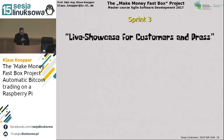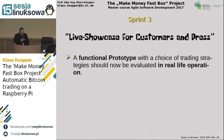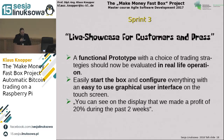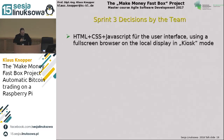Sprint two was very good for learning. From sprint three I really expected something better. The product vision for sprint three was a live showcase for customers and press. A functional prototype with a choice of trading strategies should now be evaluated in real-life operation — I should be able to put Bitcoins on the box and see how they multiply. It should be possible to easily start the box and configure everything with an easy-to-use graphical user interface on the touch screen, and you should be able to see on the display that you made a profit of 20% during the past two weeks. The team discussed how to write a graphical user interface, and since most knew HTML, that was their choice.